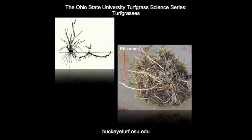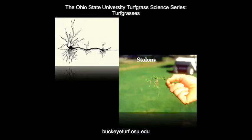Rhizomes are underground stems that give rise to new daughter plants. Of the cool season turfgrasses, Kentucky bluegrass is the predominant rhizomatous turfgrass. Stolons are similar to rhizomes except they are above-ground stems. Creeping bentgrass and some of the perennial Poa annua types have stoloniferous growth habits.